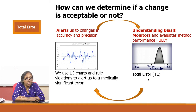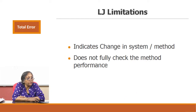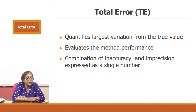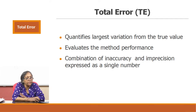LJ's limitations: it indicates changes in the system and method but does not fully check the method performance. Total error quantifies the largest variation from the true value and evaluates full method performance. It is a combination of inaccuracy and imprecision expressed as a single number.